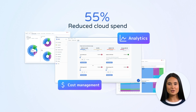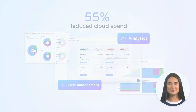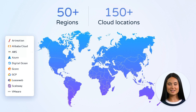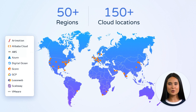Identify underutilized resources, get right-sizing options, and real-time cost insights to save on your cloud bill. The EMA's hardware-based multi-cloud networking backbone provides direct links to cloud service providers globally, enabling organizations to access cloud capacity across 50 regions and 150 cloud locations.